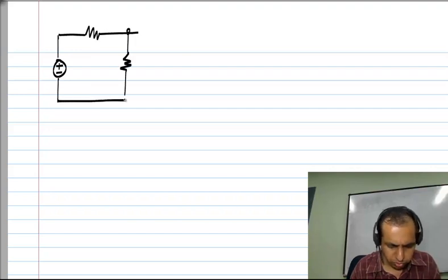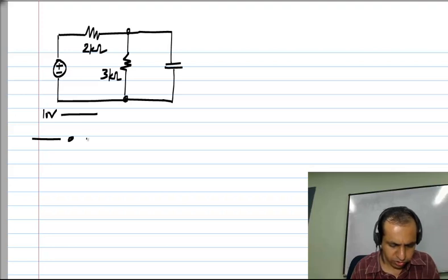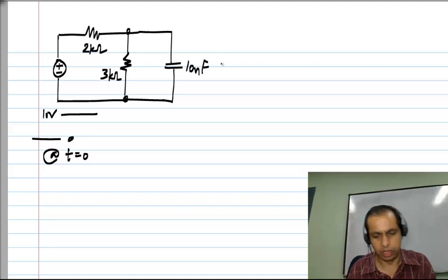Let me make the circuit slightly more complicated by having two resistors and a capacitor here. This is still nonetheless very easy, so let's say this is 2 kilo ohm and this is 3 kilo ohm resistor and this steps from 0 to 10 volts at T equals 0. And we have a capacitance which is 10 nanofarads.